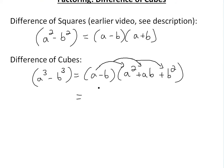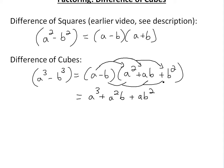So in this case we'll have a cubed: a times a squared. And this is going to be plus a squared b — a times ab — and then plus a times b squared, or ab squared. Then do the same thing with the b, multiplying every single one.